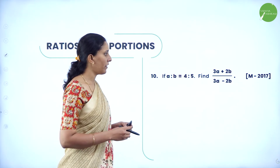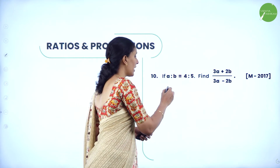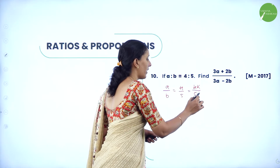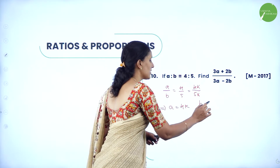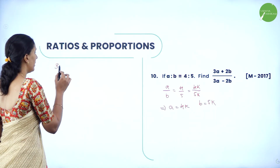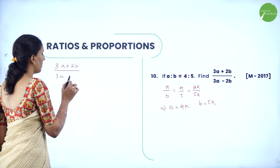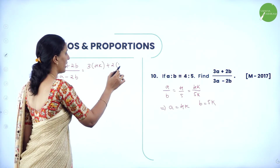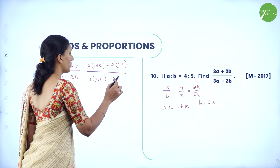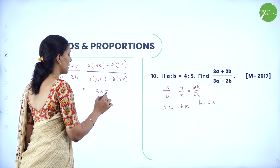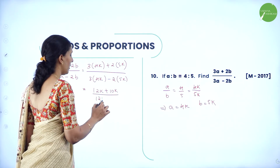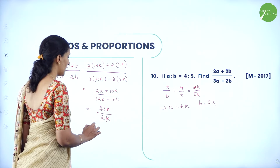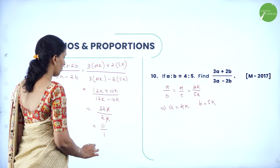Next: if A is to B equals 4 is to 5, find (3A + 2B) / (3A − 2B). Let A = 4K and B = 5K. Substituting: (3×4K + 2×5K) / (3×4K − 2×5K) = (12K + 10K) / (12K − 10K) = 22K / 2K = 11. So the answer is 11 is to 1.